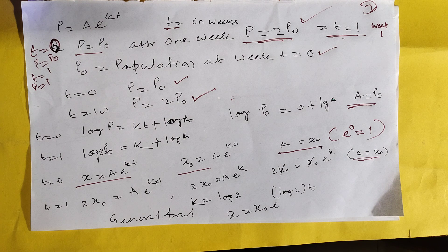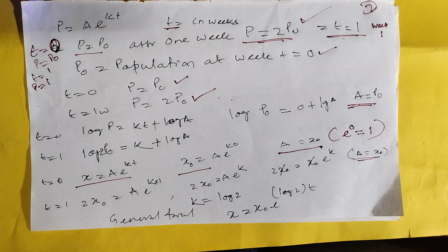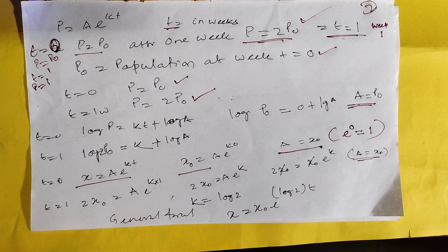Then P is equal to A times e to the Kt. T is equal to in weeks. When t equals 0, P equals P0. When t equals 1, P equals 2P0.